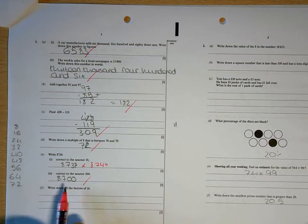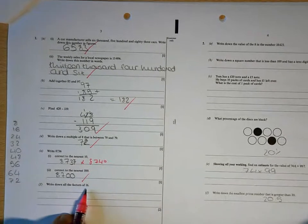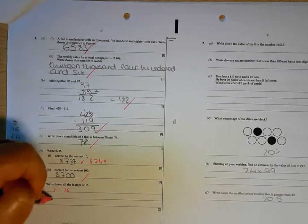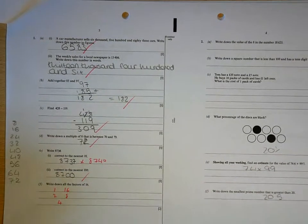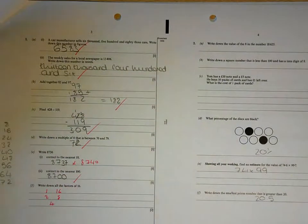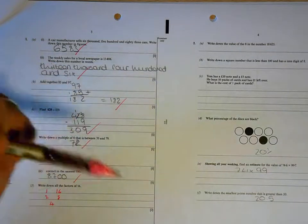Factors of 16 are the numbers that go into 16 exactly. So 1 and 16, 2 and 8, 2 8's are 16, and 4 4's are 16, so the factors of 16 are those. So for that first question, 1, 2, 3, 4, 5, 6.